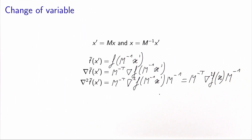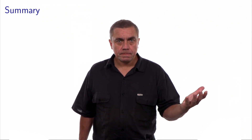Therefore, the idea of preconditioning is about finding a change of variable defined by the matrix M such that the condition number of f' will be better than the condition number of f. We have seen that the condition number reflects the geometry of the function through the ratio of extreme curvatures, and it can be changed with an appropriate change of variables. This change of variable is called preconditioning.